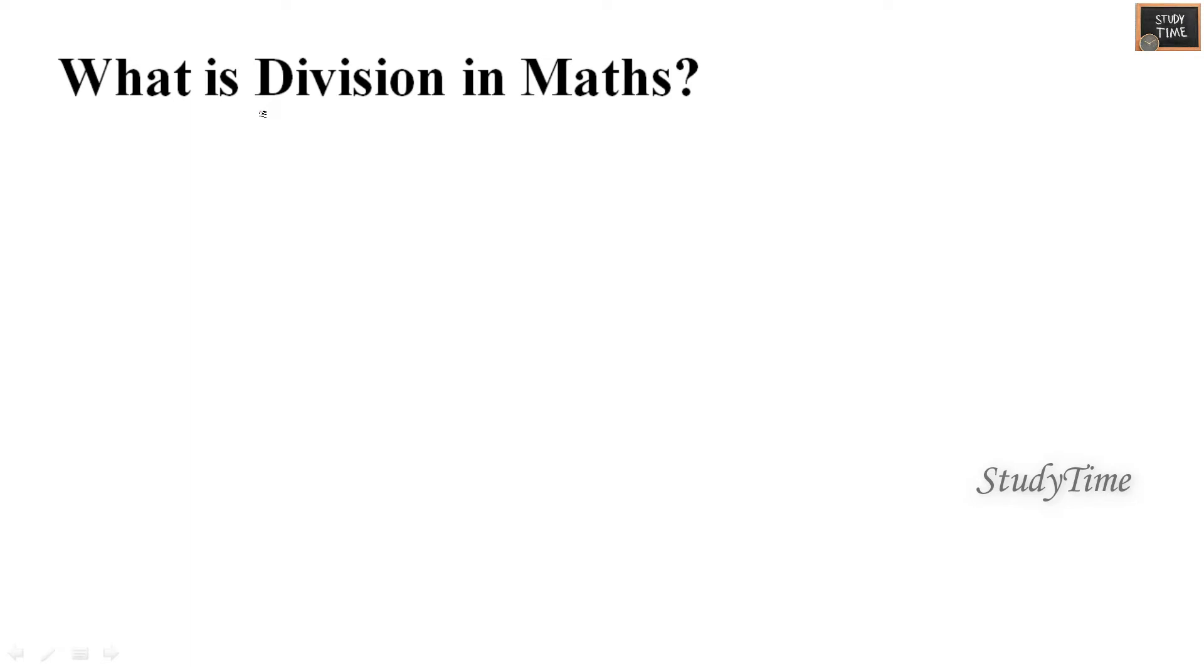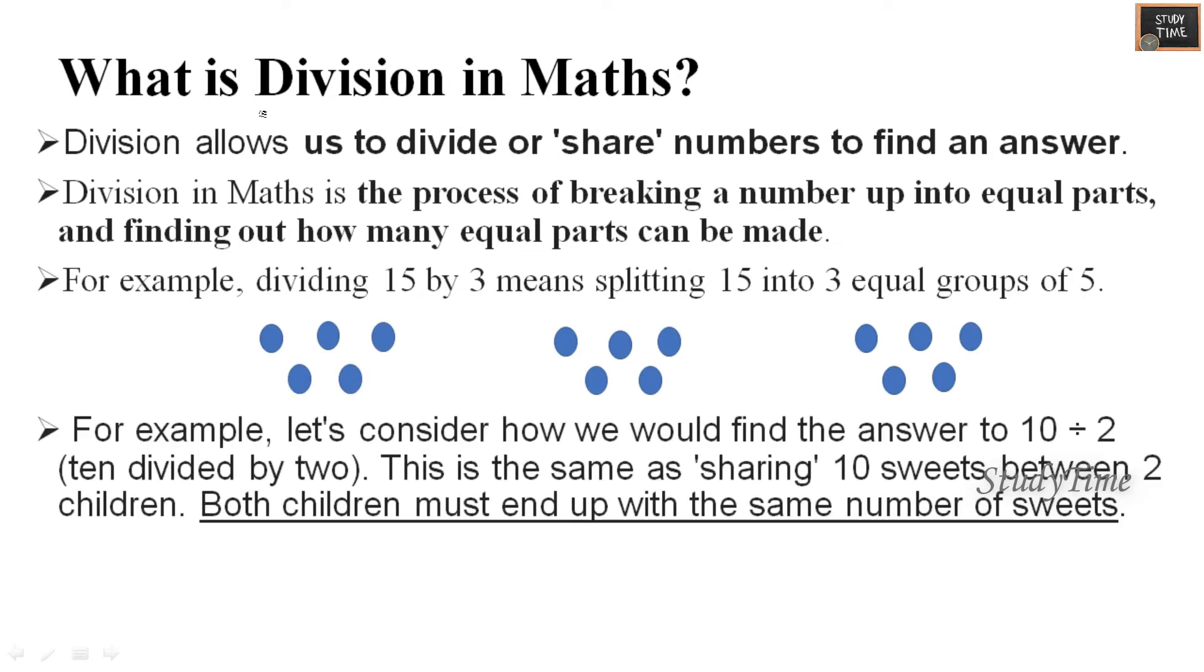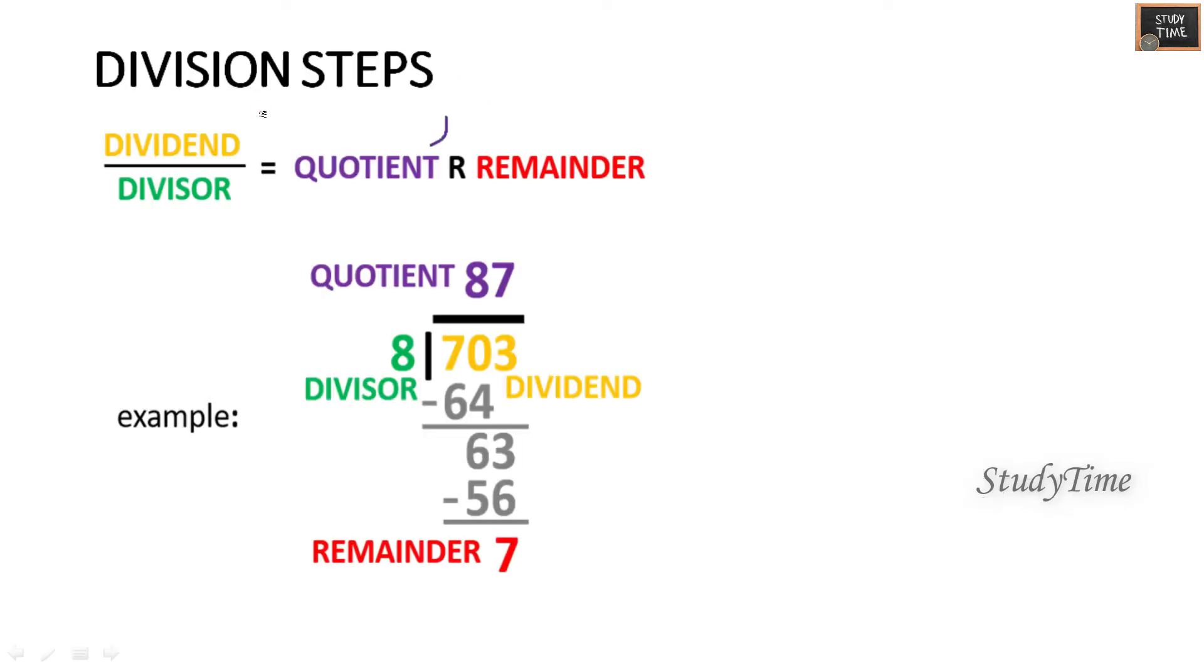What is division in maths? Division is nothing but repeated subtraction is called as division. It helps us to divide or share numbers to find an answer. For example, if you want to divide 15 by 3, that means you are splitting 15 into 3 equal groups of 5. Division steps: dividend divided by divisor is equal to quotient, and if you get the remainder that you have to keep it separately.